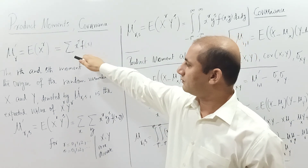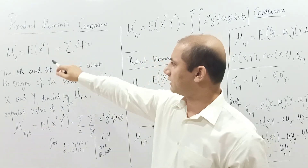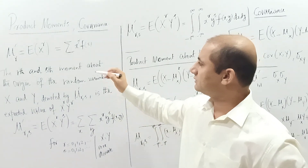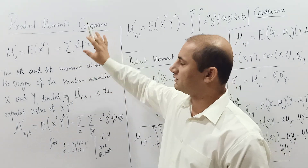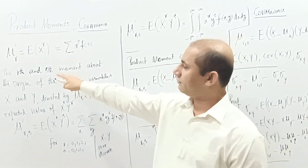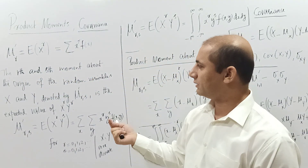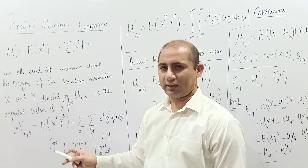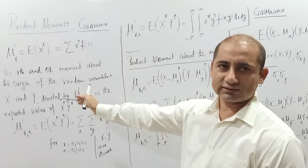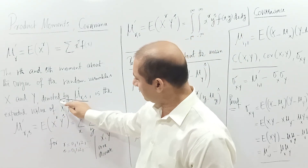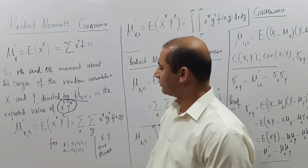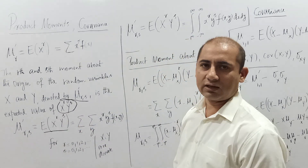This is the moment formula when dealing with one variable — the r-th moment about the origin. When we put the dash we refer to the origin; when we remove the dash we refer to the mean. Now extending to two variables x and y, the r-th and s-th moment about the origin is denoted mu_{r,s}' and is defined as the expected value of x^r * y^s.